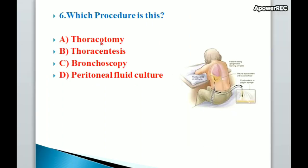Next question: which procedure is this? Options: thoracotomy, thoracentesis, bronchoscopy, peritoneal fluid culture. Correct answer is thoracentesis. Thoracentesis is a procedure in which a needle is inserted into the pleural space between the lungs and the chest wall to remove excess fluid, also known as a pleural tap.